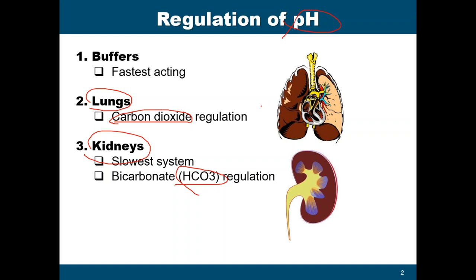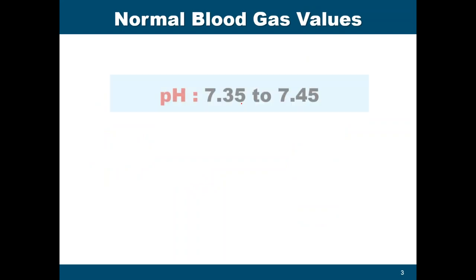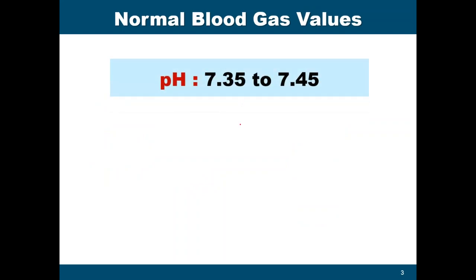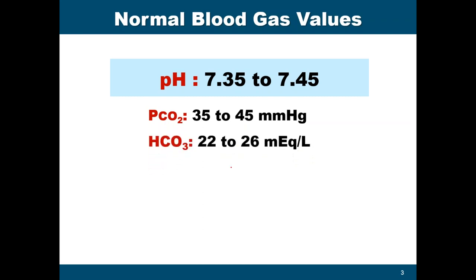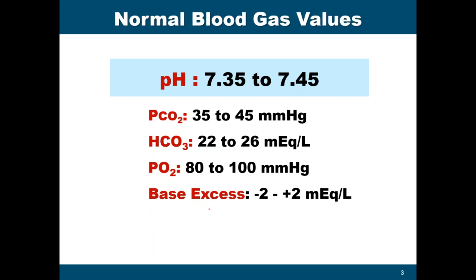The most important thing to remember is that your pH is something your body needs to maintain as normal as possible, because an extreme change in the value of the pH leads to the death of the patient. The normal blood gas values are: pH 7.35 to 7.45; pCO2 or carbon dioxide level 35 to 45 mmHg; bicarbonate 22 to 26 mEq/L; pO2 or oxygen level 80 to 100 mmHg; and base excess minus 2 to plus 2 mEq/L.